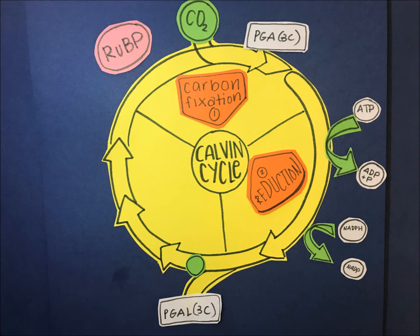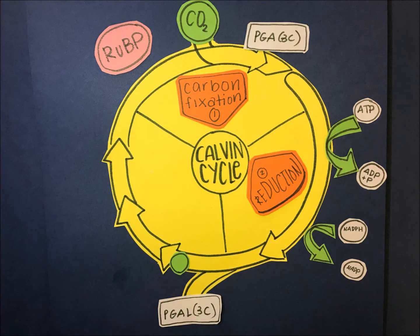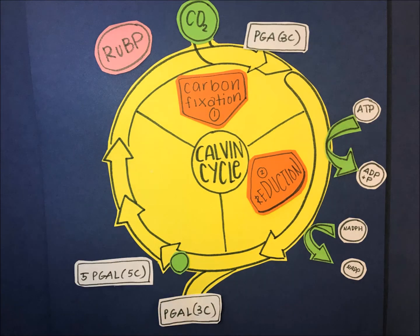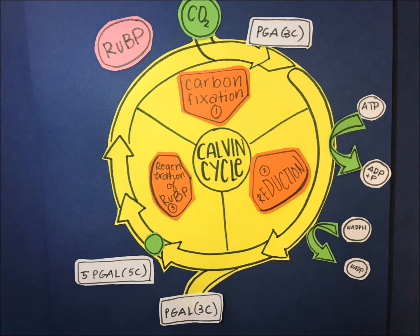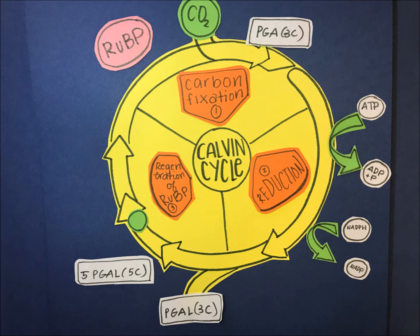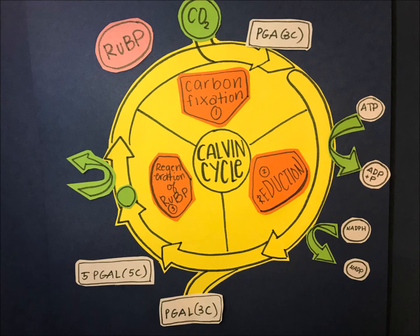Step 3: Regeneration of RuBP. A complex series of reactions rearranges the carbon skeletons of five G3P molecules into three RuBP molecules. These reactions require three ATP molecules. RuBP is thus regenerated to begin the cycle again.